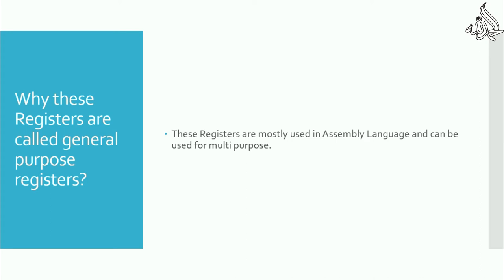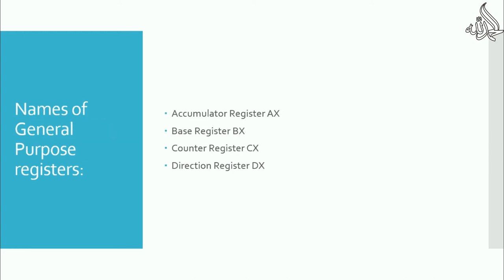Taking each register one by one, we will discuss their functionalities. First, the accumulator register: it is used to take input from the user — that is its first purpose. It is also used to display output on screen — that is its second purpose. You can also use this register to temporarily store the value of a variable. These three are the basic main functions of the accumulator register.